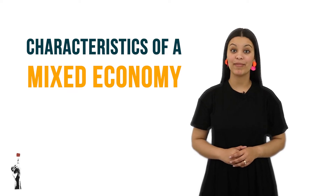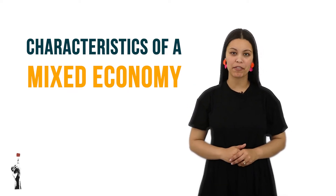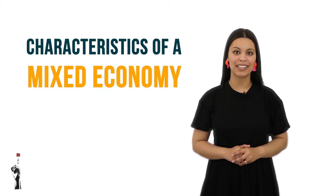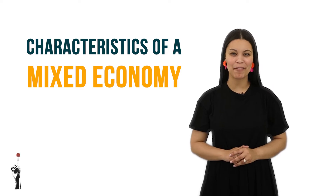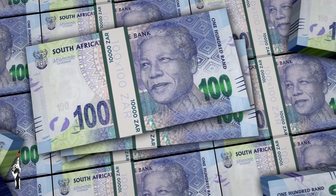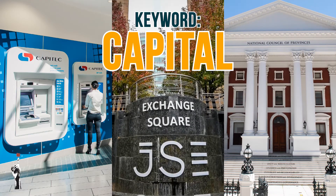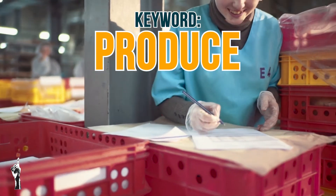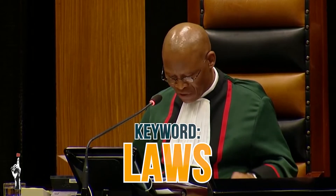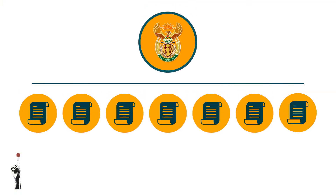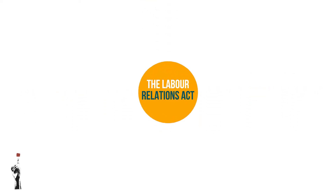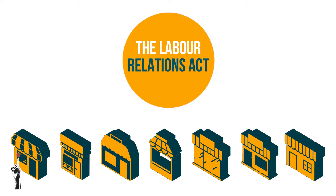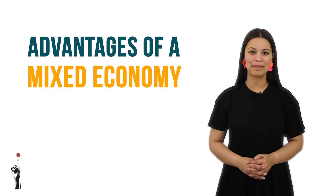Let's have a look at the characteristics of the mixed economy. Remember, the keywords for every characteristic will pop up on the screen — it's your responsibility to summarize them. Firstly, capital is received from banks, shareholders, and the government. Secondly, entrepreneurs decide what they would like to produce. Finally, the government passes laws to control certain economic activity. An example of a law that all businesses need to abide by is the Labour Relations Act.